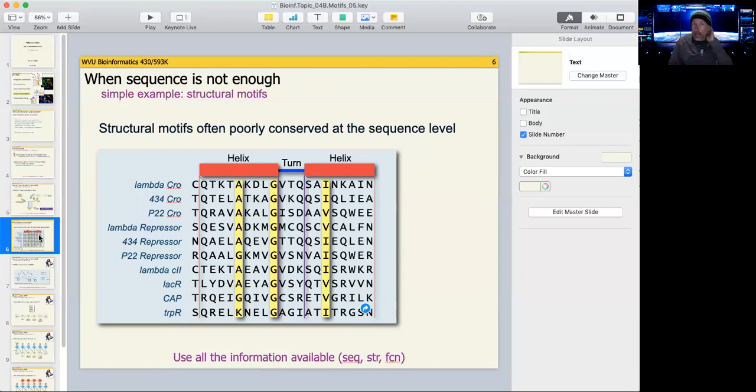But another problem that we have in finding motifs is that sequence may not be conserved directly. But instead, there's conservation at some other level of organization. So the simplest, most straightforward one to think about in terms of conservation is structure.